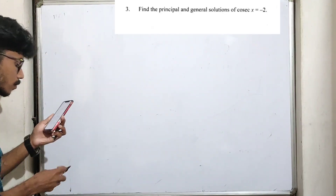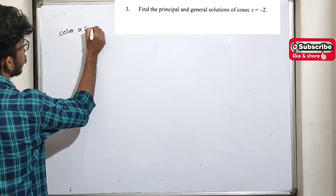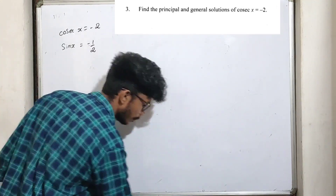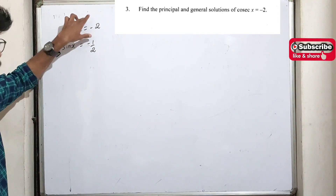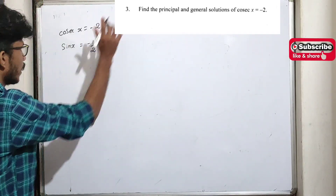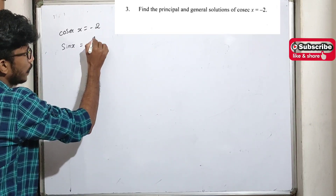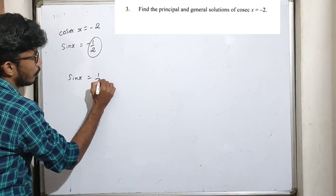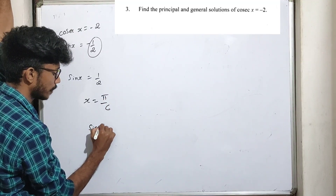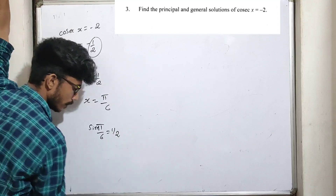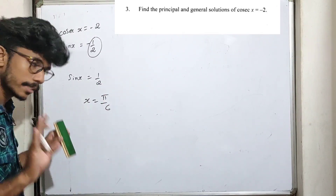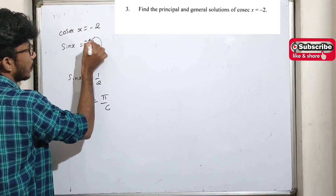If you want to find the principal solution, sin x is equal to minus 1 by 2. When x equals 5π/6, sin(5π/6) is equal to minus 1 by 2. Now let's go to the quadrant to find the negative sign.